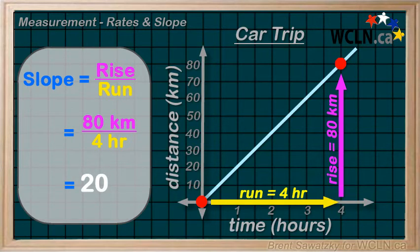But we remember our units—kilometers on top and hours on the bottom—so the units of our slope, kilometers per hour, should look familiar. It's the speed of the car.